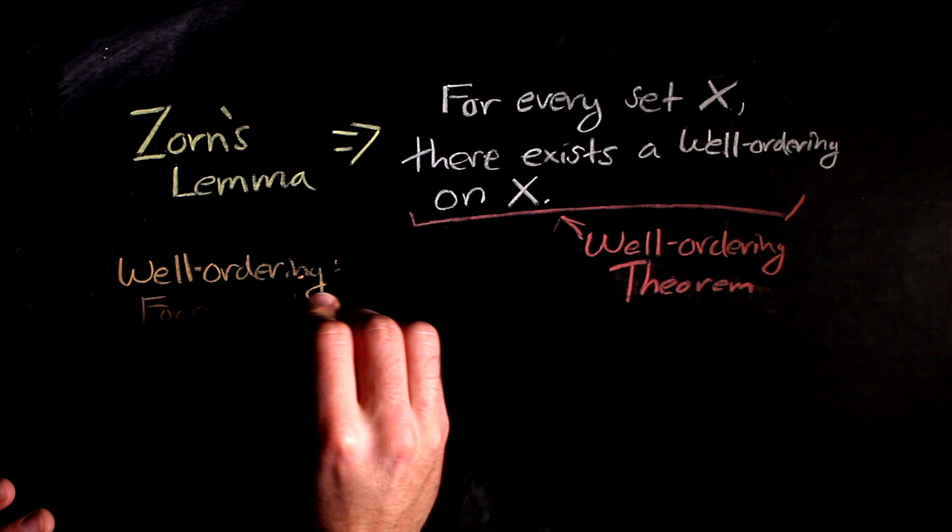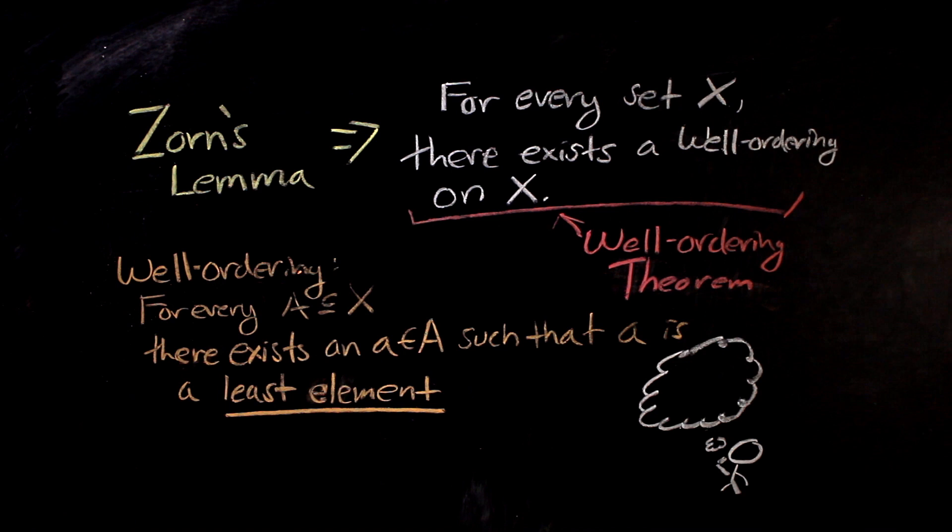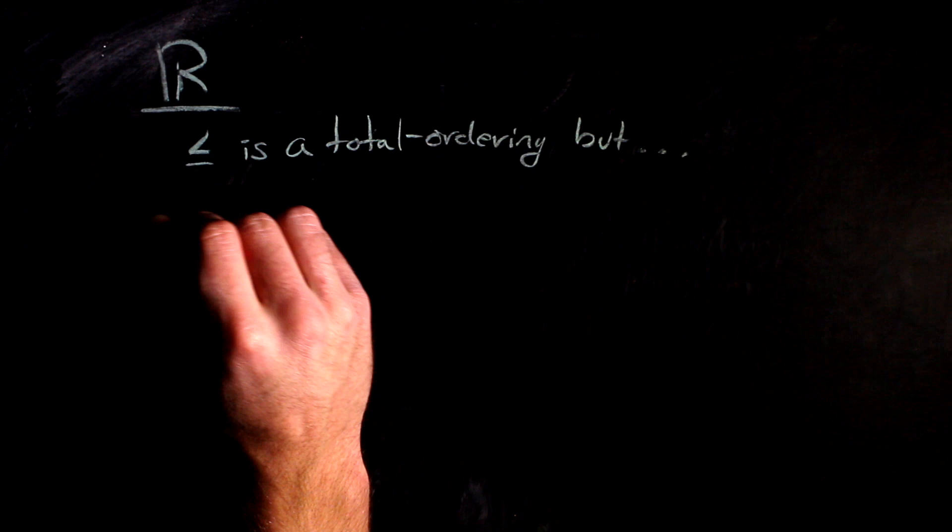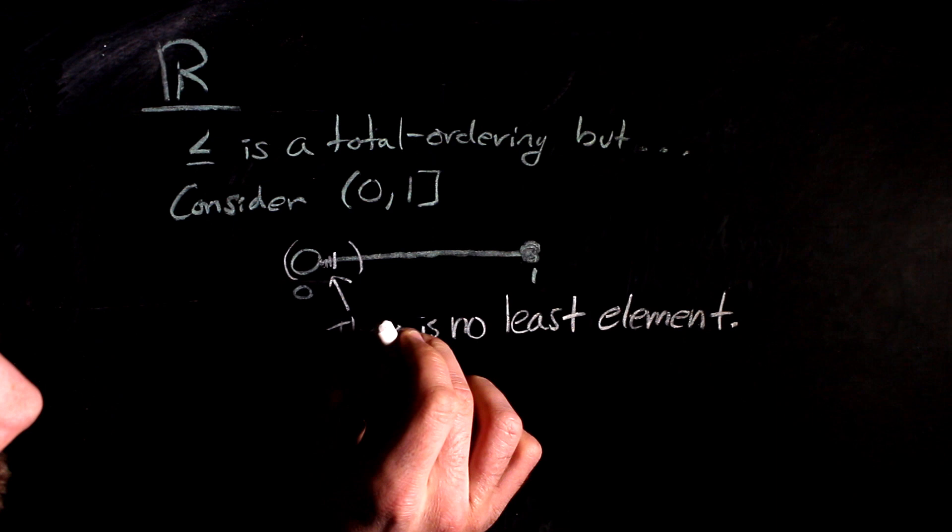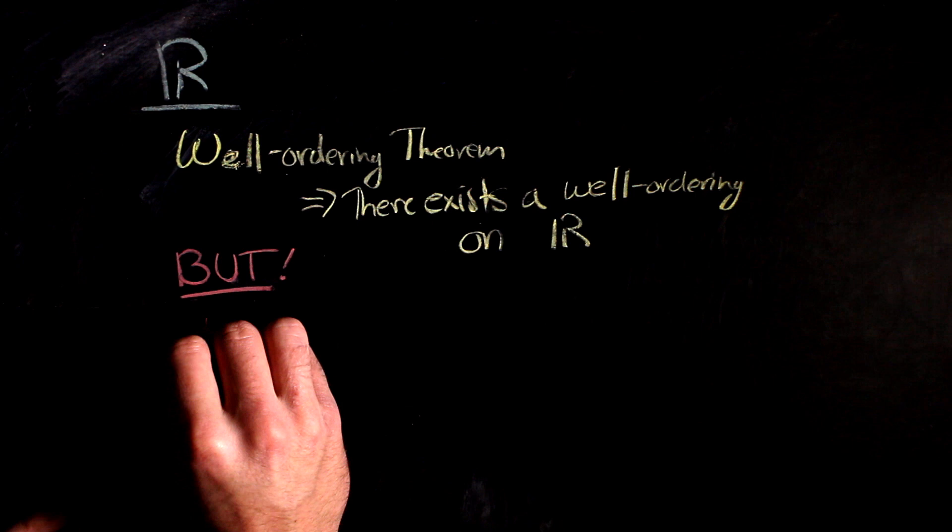So, what happens with the real numbers? We have a notion of a total ordering on the real numbers, less than or equal to. But this ordering is not a well-ordering, because open intervals would not have least elements. In fact, even though this theorem grants the existence of a well-ordering on the real numbers, it has been shown that this ordering cannot be defined in a set-theoretic sense.